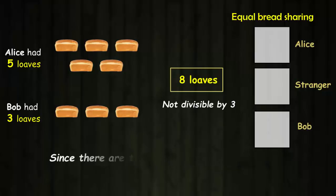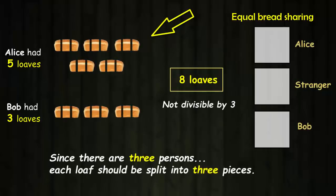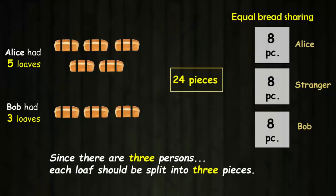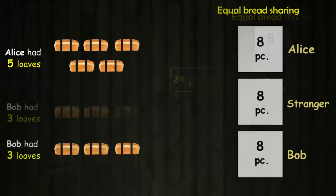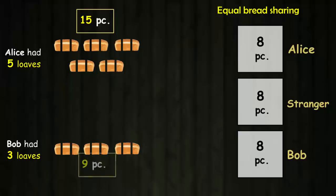Since there are three persons, each loaf should be split into three pieces. So eight times three would give twenty-four pieces, and each of them would take eight pieces. Alice initially had five loaves, which is equal to fifteen pieces. Bob initially had three loaves, which is equal to nine pieces.